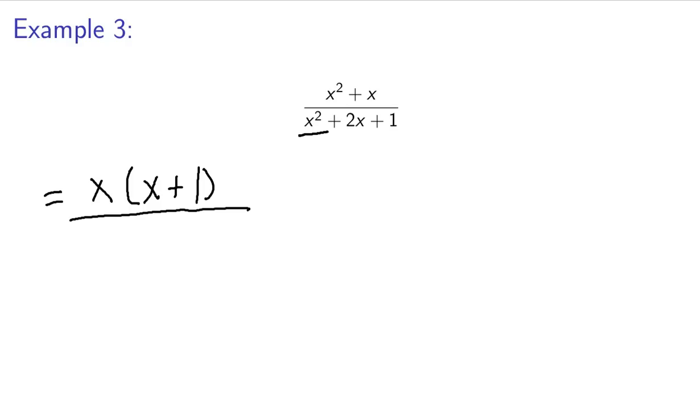And down here in the numerator, I have x squared plus 2x plus 1. So I want 2 numbers that multiply to make 1 and add to make 2. Well, that's just going to be x plus 1 times x plus 1. But I'm going to go ahead and simplify this to x plus 1 squared.